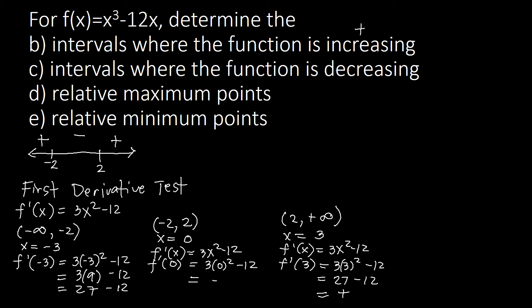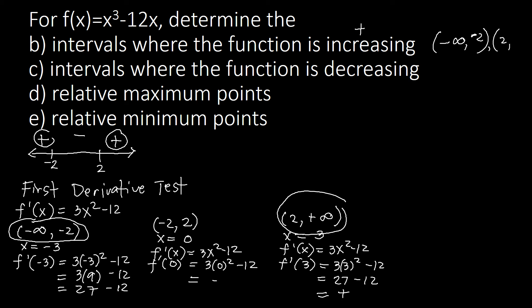From the sign analysis, the intervals that are positive correspond to an increasing function. Region 1 — from negative infinity to -2 — is increasing, and region 3 — from 2 to positive infinity — is also increasing. The interval from -2 to 2, which gave a negative sign, corresponds to a decreasing function.